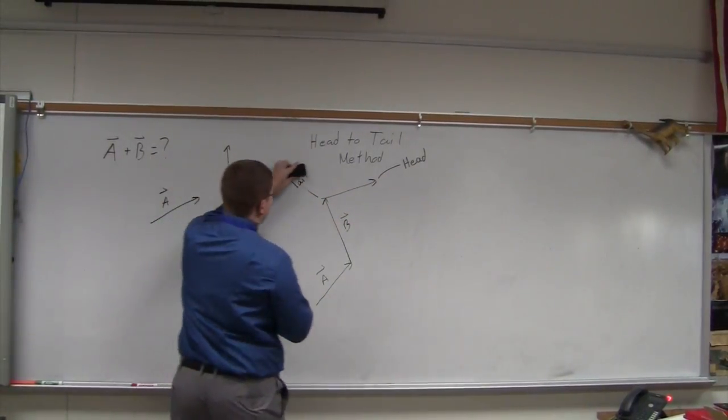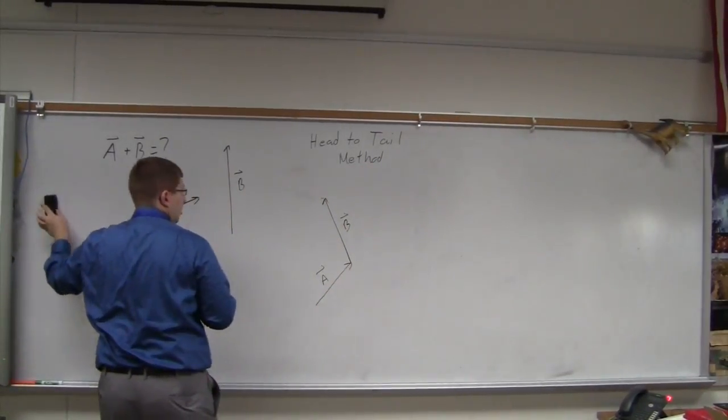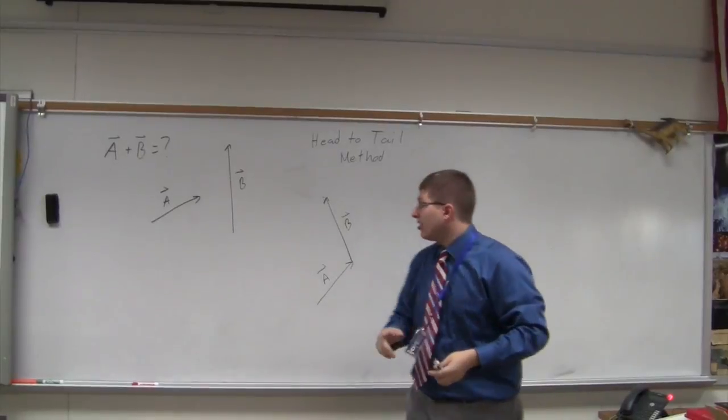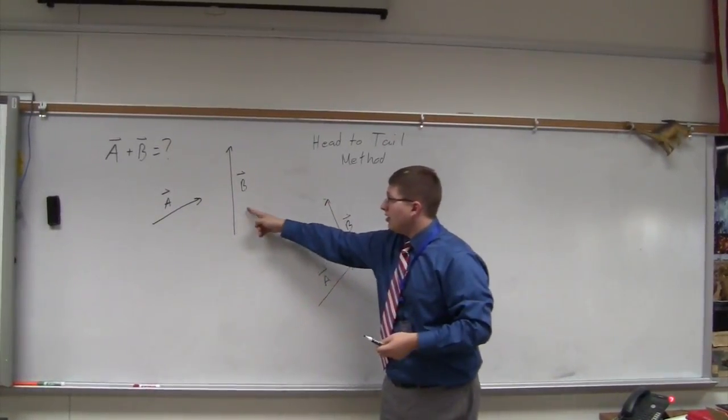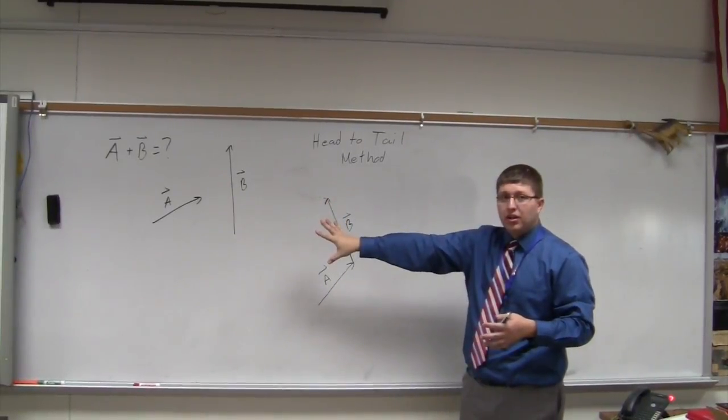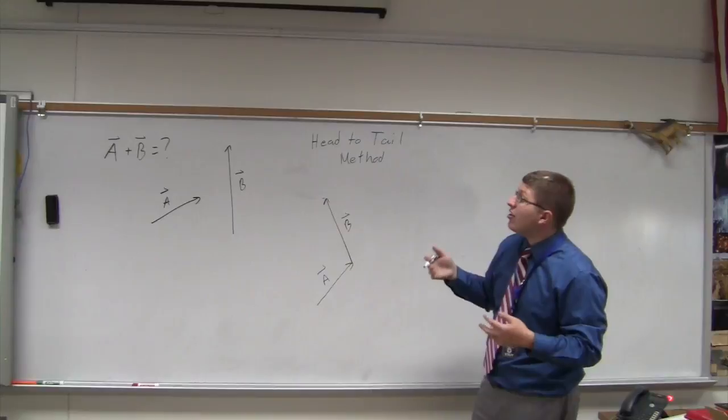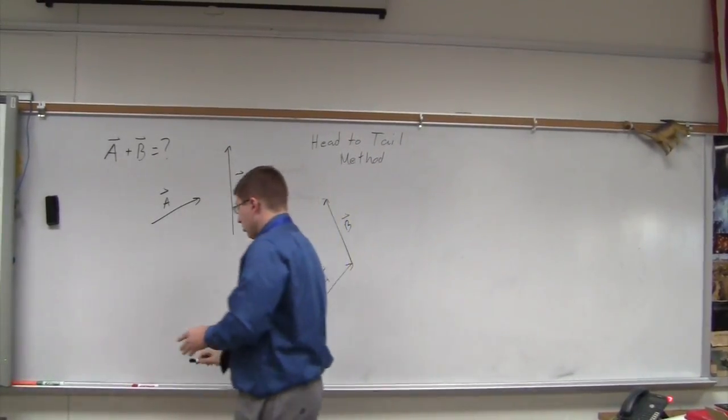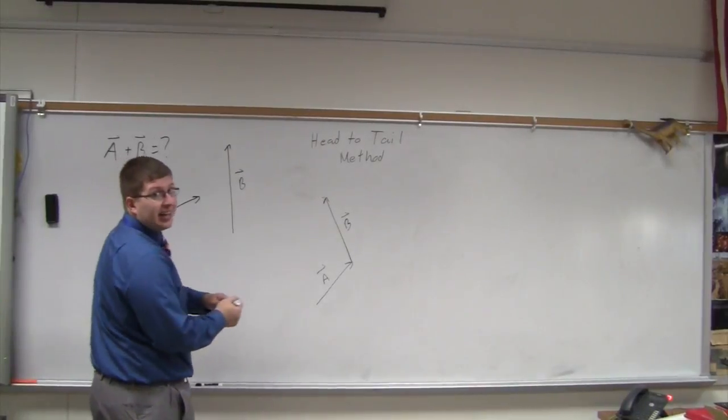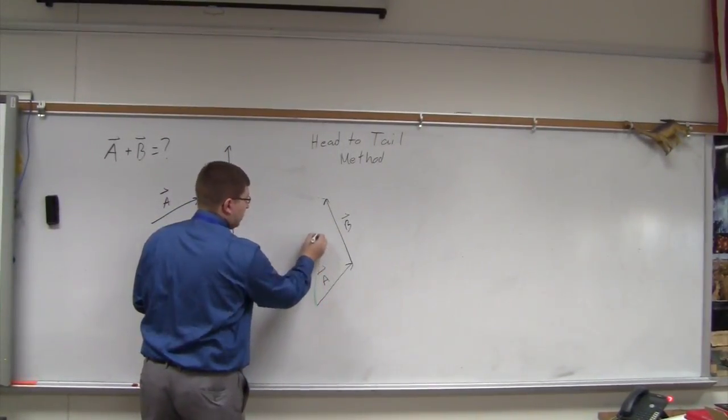And so I'm just going to make a little bit of space here on the board. And what you can see here is that I'm adding vector A and B. So this is vector A, this is vector B, just sitting there at the beginning of the problem. Now I've just arranged them head-to-tail. To find the sum of those two vectors,